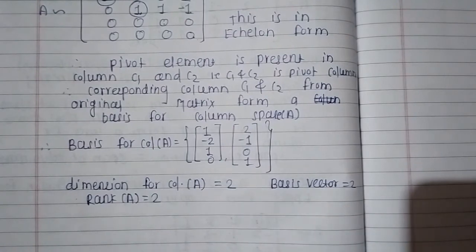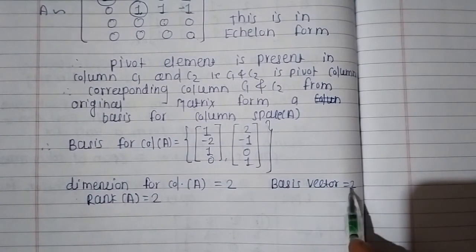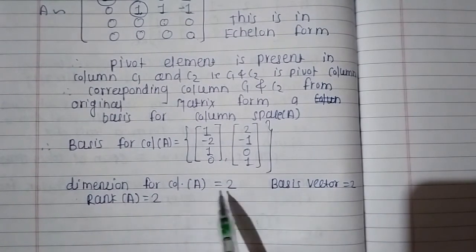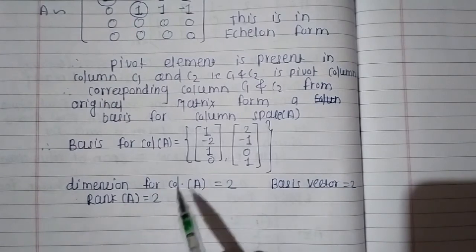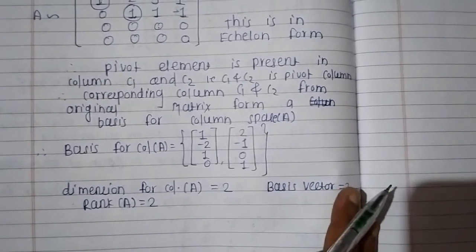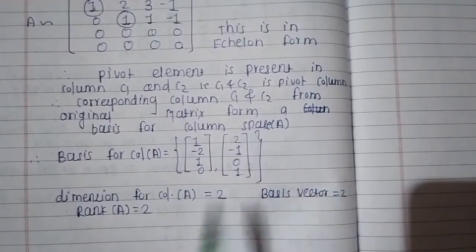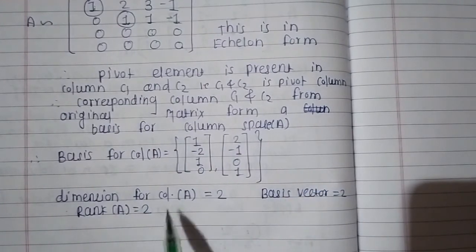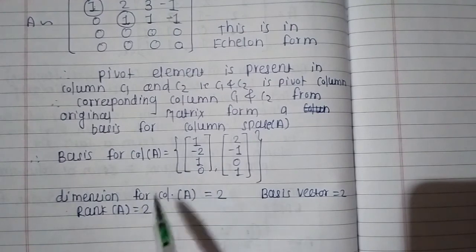Since there are two linearly independent basis vectors, the dimension of the column space of A is 2. The rank of the matrix equals the dimension of the column space, which is also the number of non-zero rows after reducing to row echelon form. Therefore the rank of A is 2.